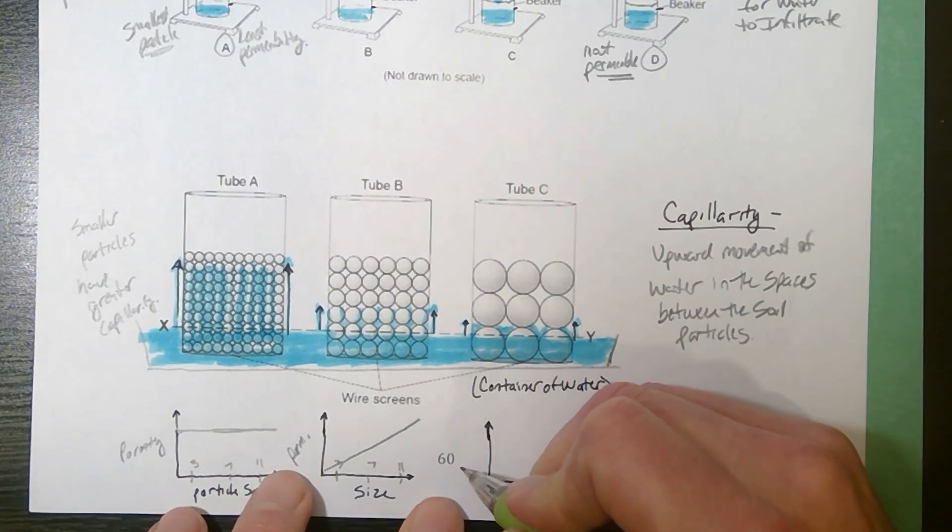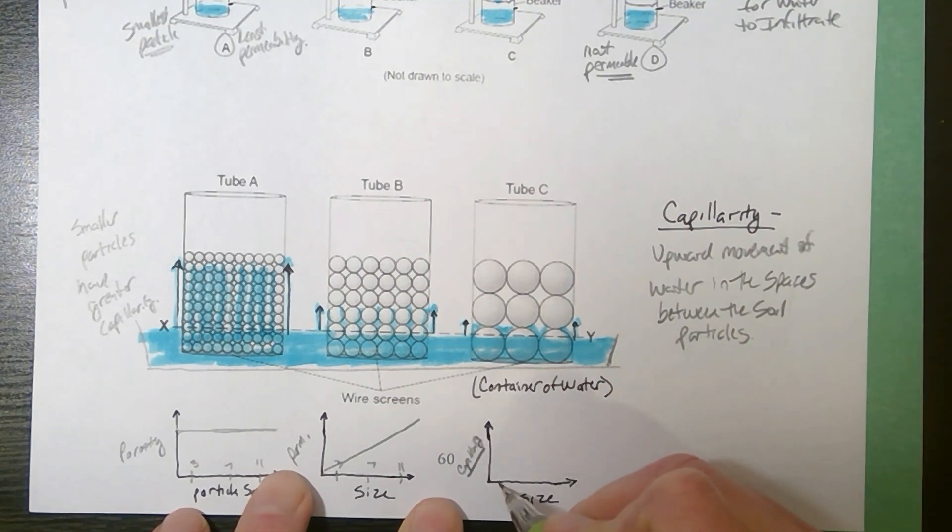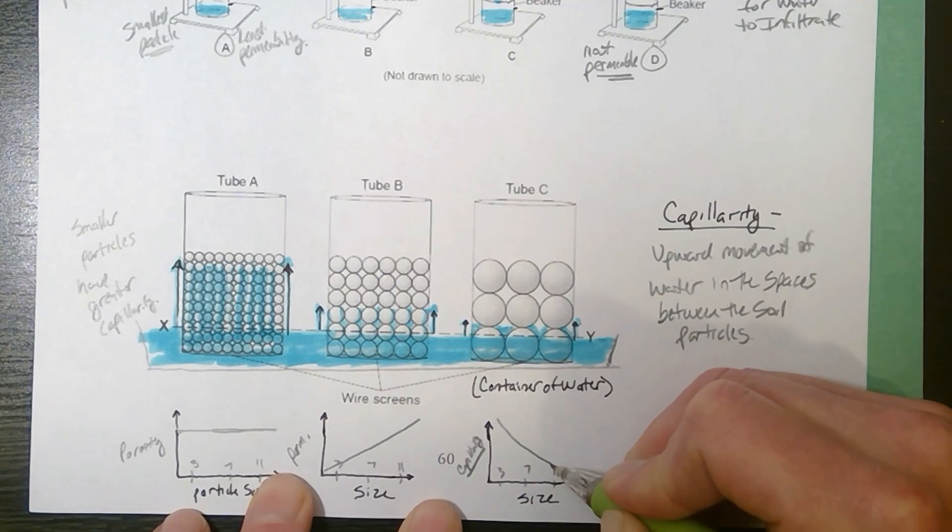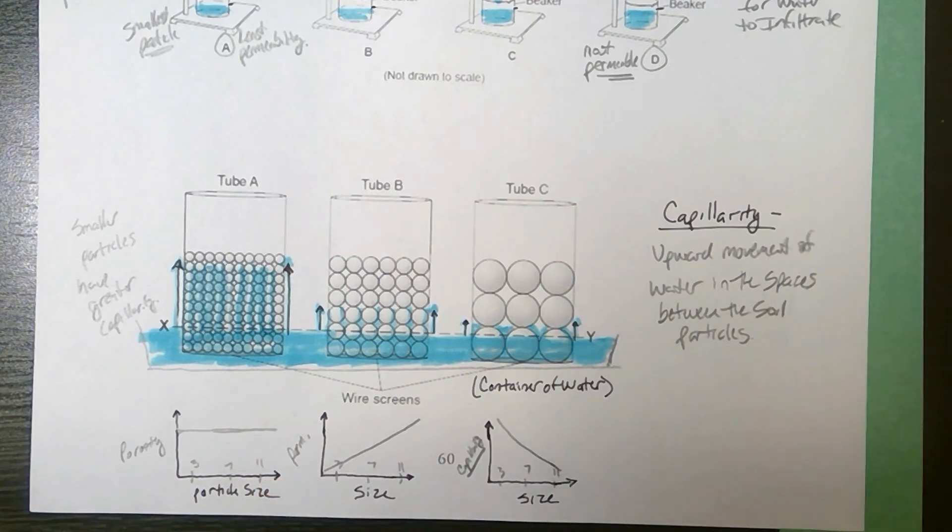Now, when you look at capillarity, which is the upward movement, if I went from 3 to 7 to 11 millimeter beads, the 3 millimeter beads, the smaller particles actually have greater capillary action. I hope that helps your understanding of these concepts. Take care.